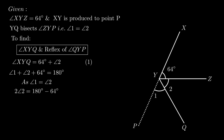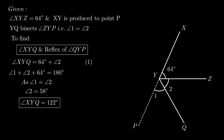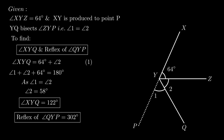Since angle 1 equals angle 2, twice of angle 2 equals 180 minus 64 degrees. On further simplification, angle 2 becomes 116 divided by 2, which equals 58 degrees. Using equation number 1, angle XYQ equals 64 plus 58, which is equal to 122 degrees. As angle XYQ equals angle QYP, therefore the reflex of angle QYP equals 360 minus 58, which is equal to 302 degrees.